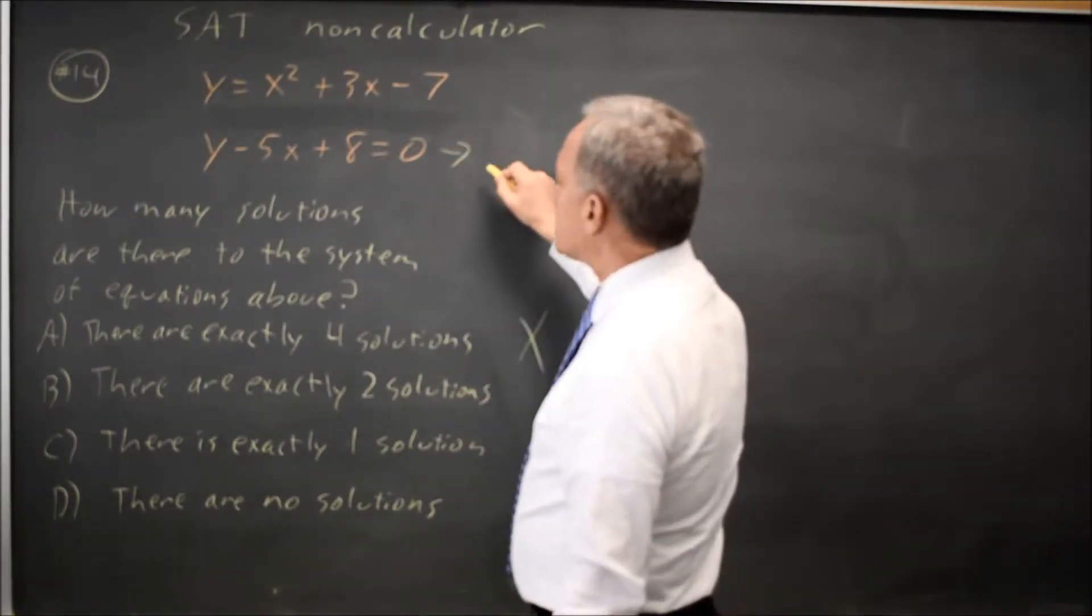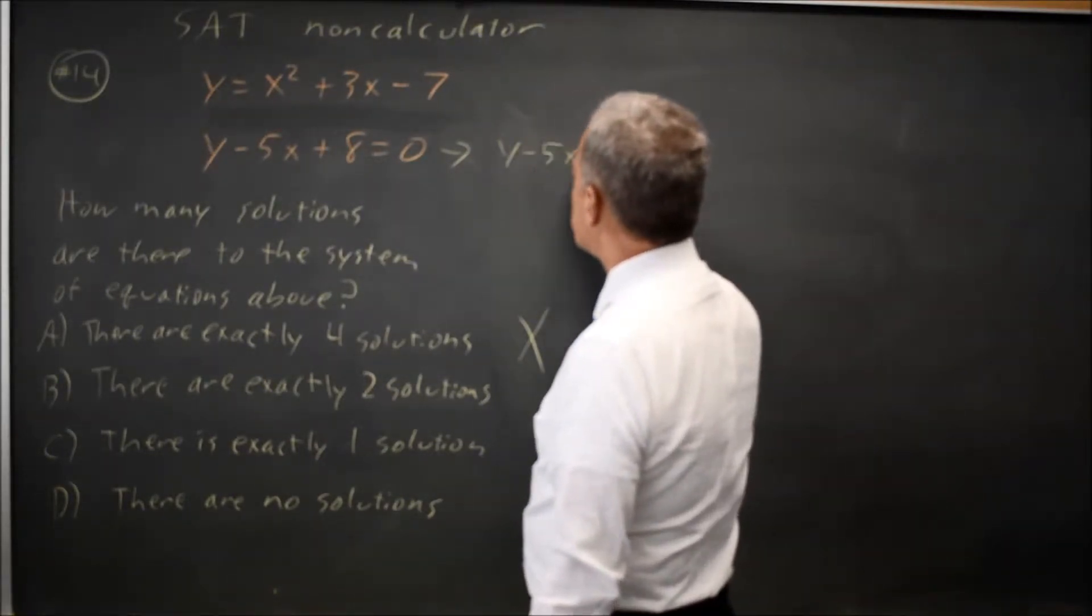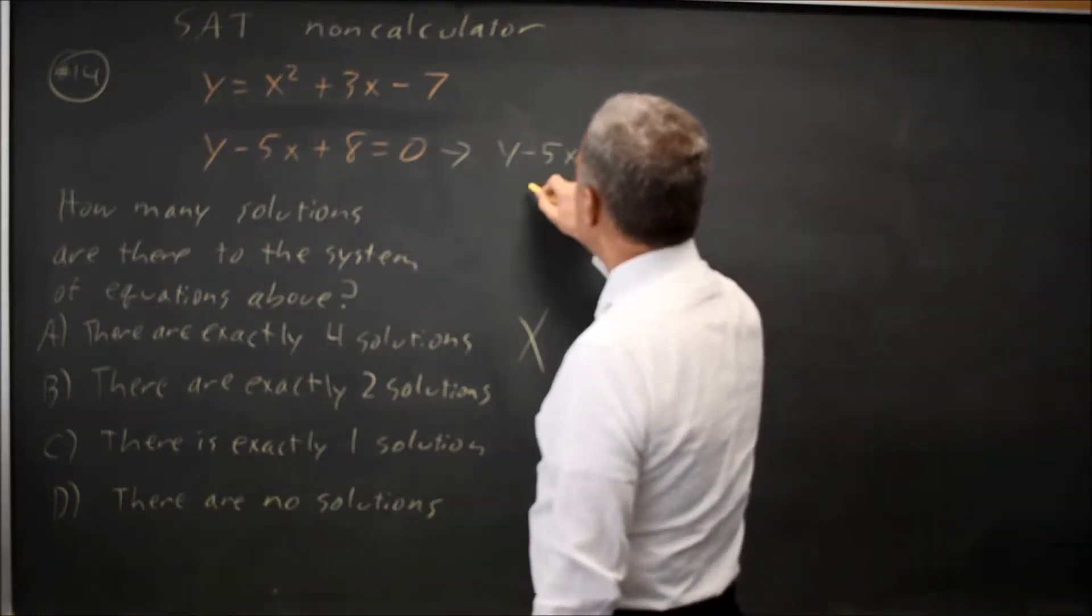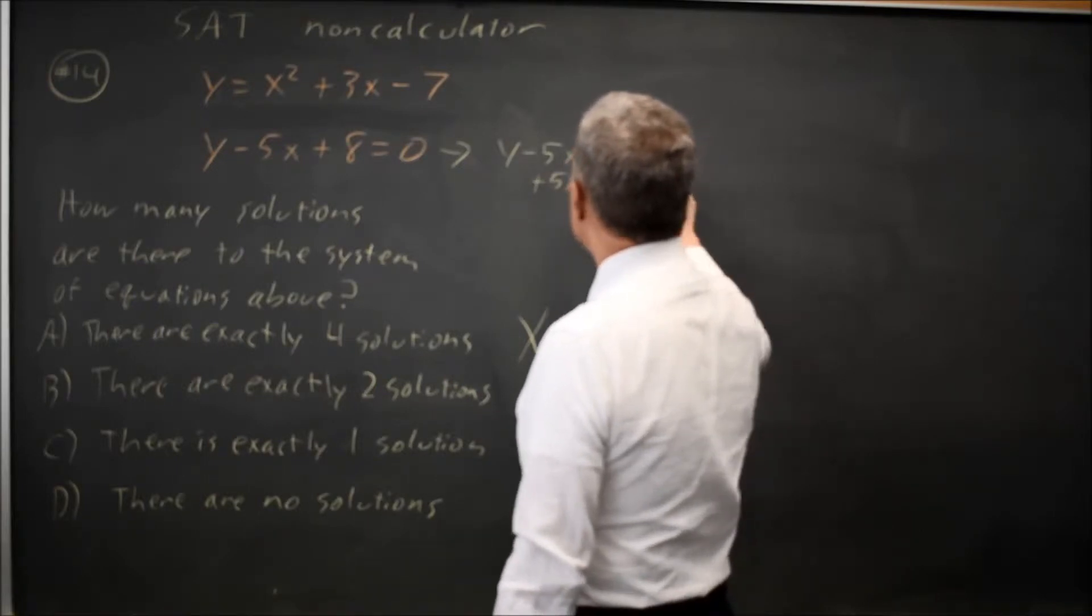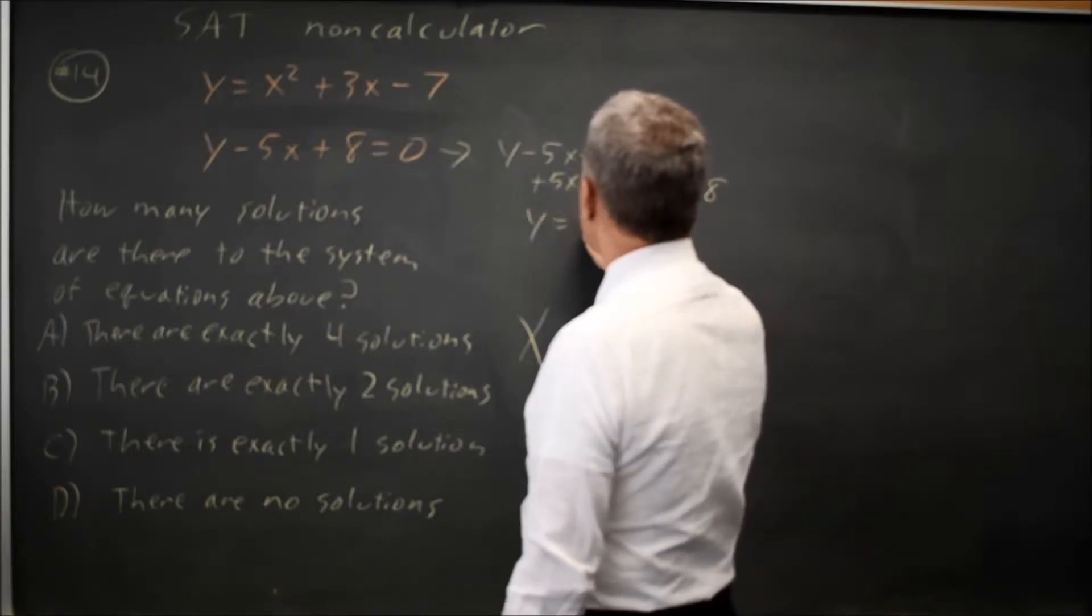I'm going to solve the second equation for y. I have y minus 5x plus 8 equals 0. If I add 5x to both sides and subtract 8 from both sides, I get y equals 5x minus 8.